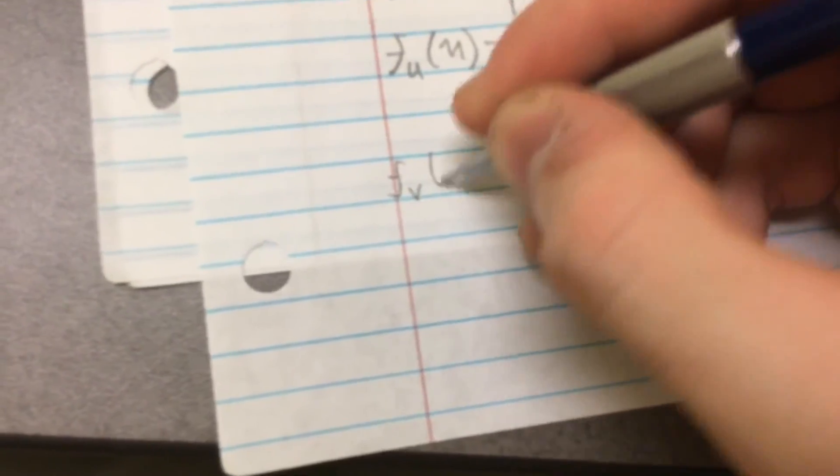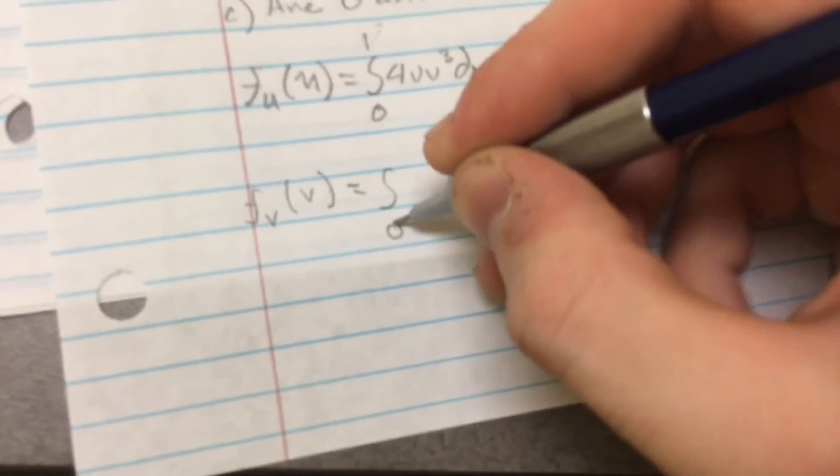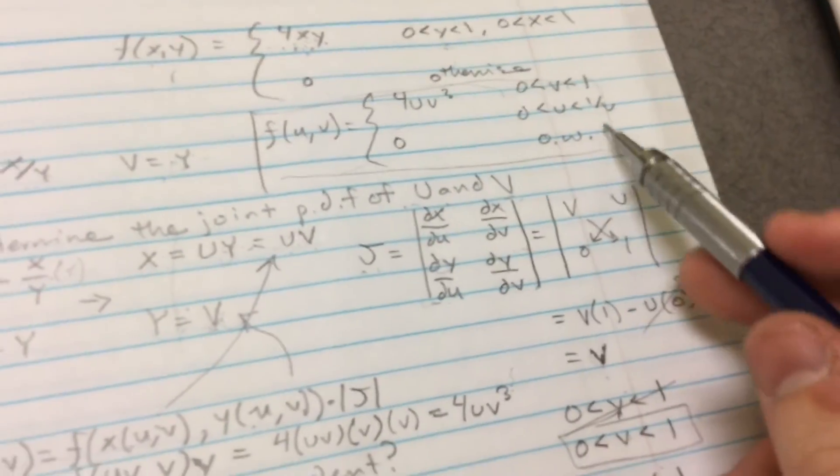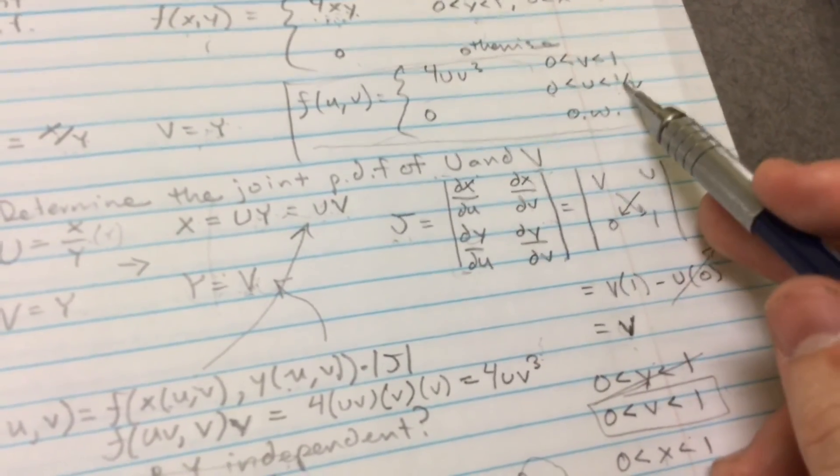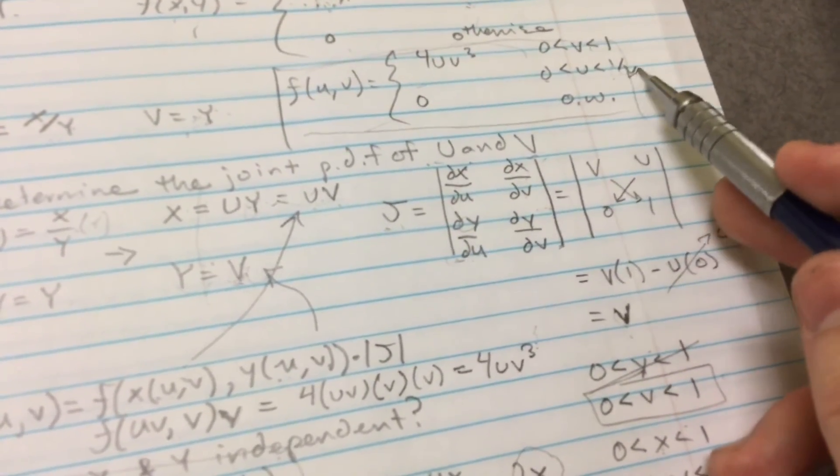And that will be equal to U. Yeah, it will be equal to U, I believe. Okay, and then now we want to find the partial of V. And we have the bounds, or we have the limit, yeah, right there. U is between 0 and 1 divided by V.